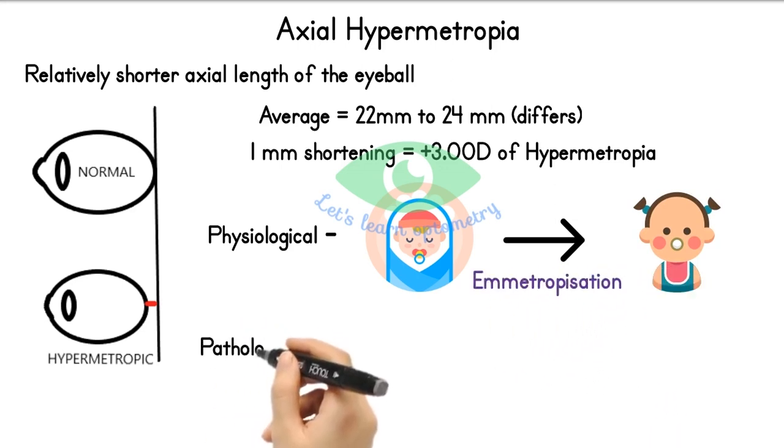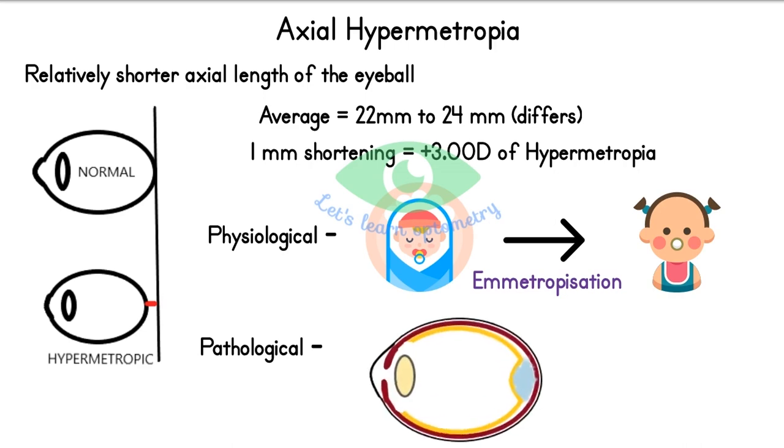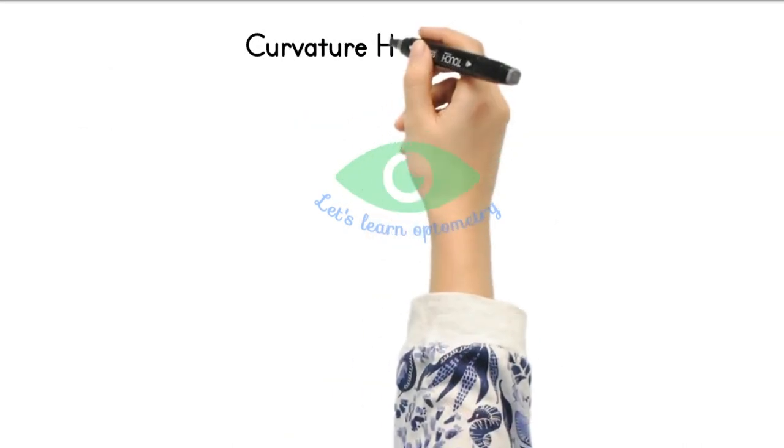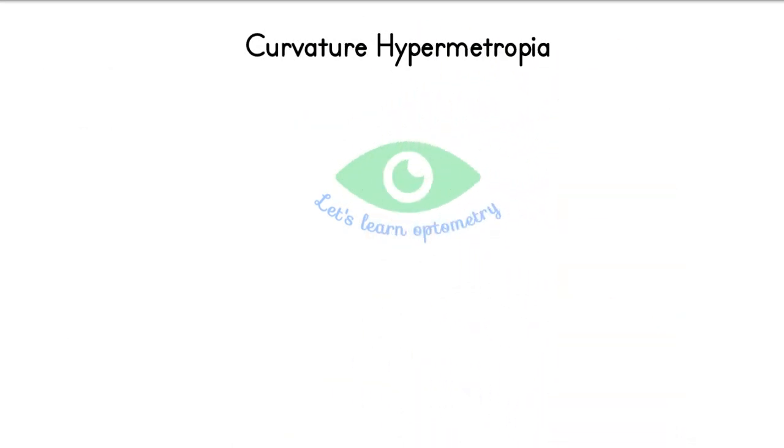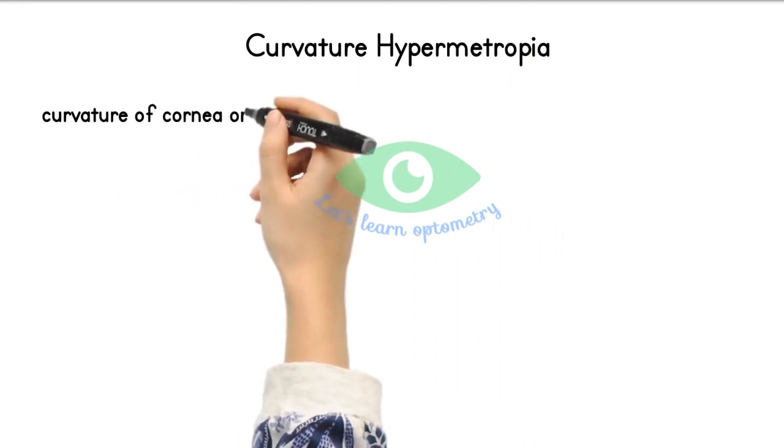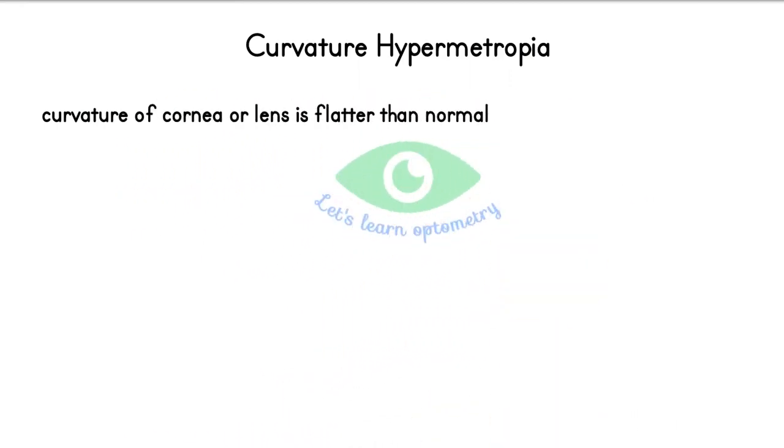Pathologically, axial hypermetropia happens when the retina is pushed forward, such as in tumors, retinal detachment, or central serous retinopathy. Curvature hypermetropia occurs when the curvature of the cornea or lens is flatter than normal.